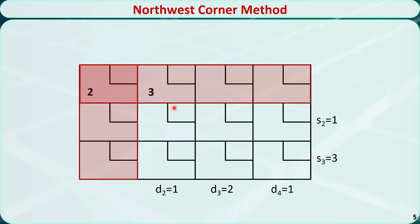Let's continue with the process. Find the Northwest Corner cell in the remaining tableau, which is this one. Allocate as much as possible to this cell and subtract the allocated amount from S2 and D2. The largest amount we can allocate is 1. We put 1 here; D2 will be 0 and S2 will be 0 as well. We have a tie, so we randomly choose to cross out the entire row and remove S2.